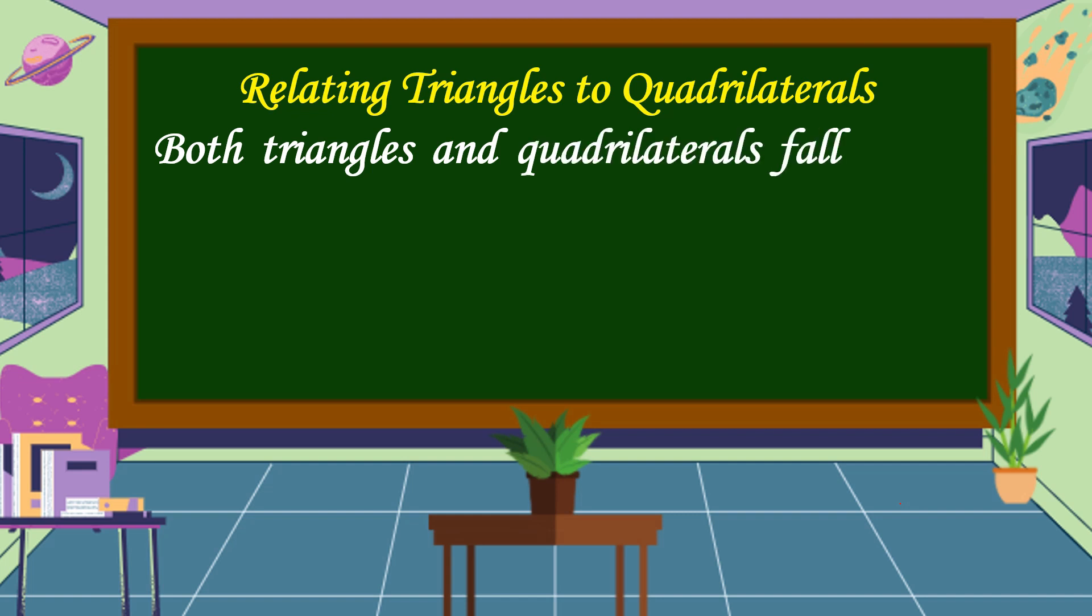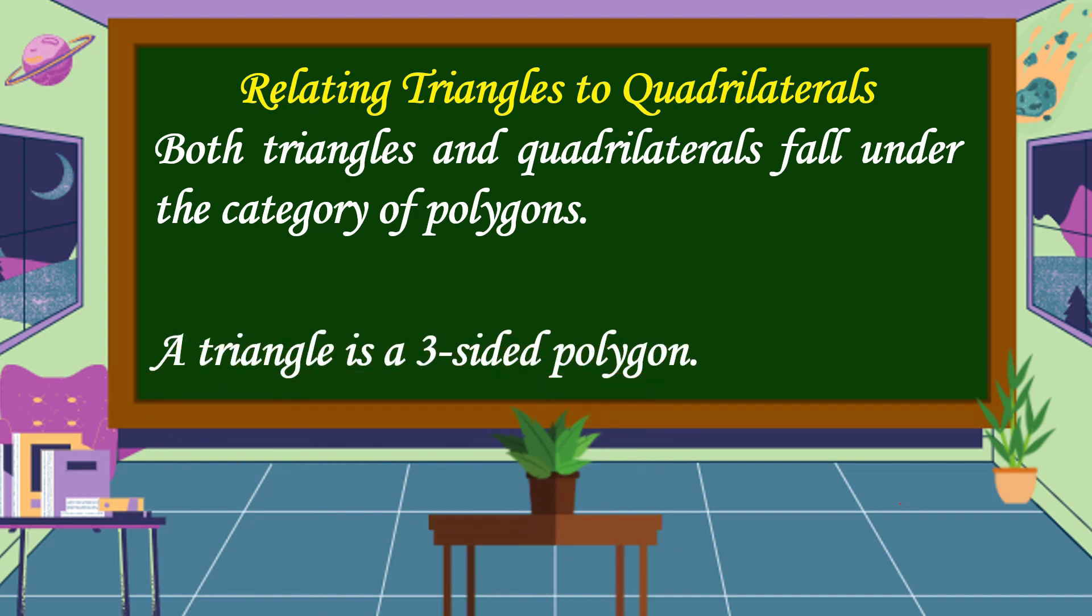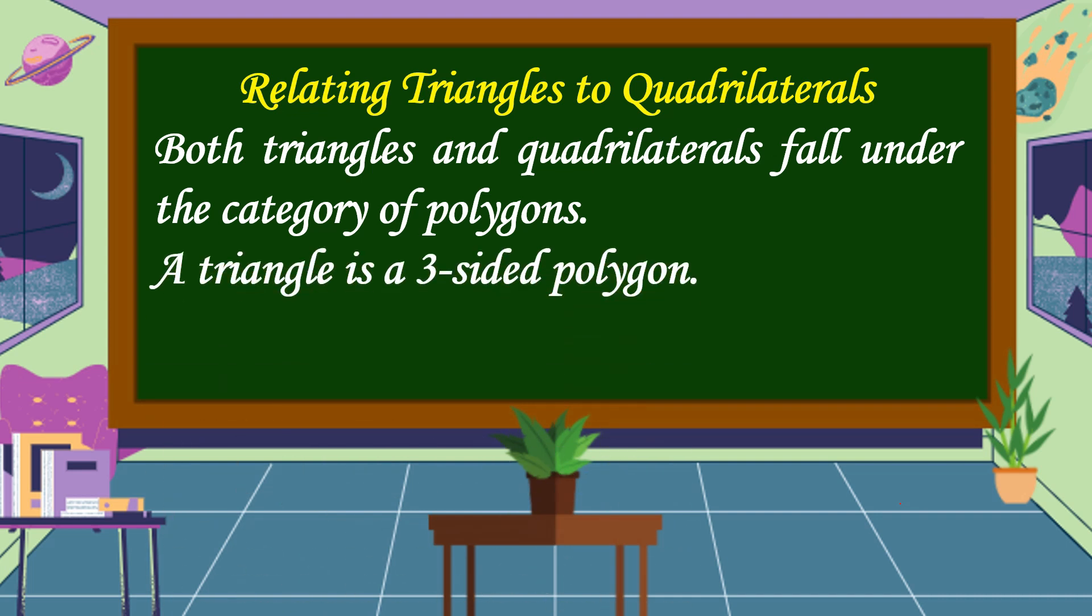Both triangles and quadrilaterals fall under the category of polygons. A triangle is a three-sided polygon. A quadrilateral is a four-sided polygon.